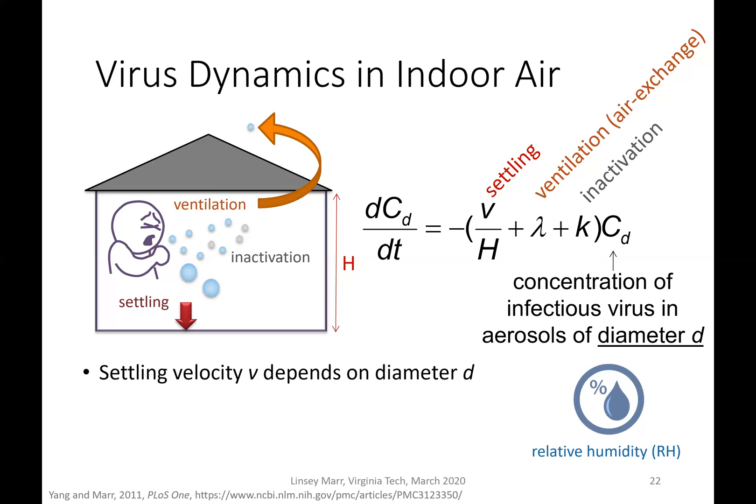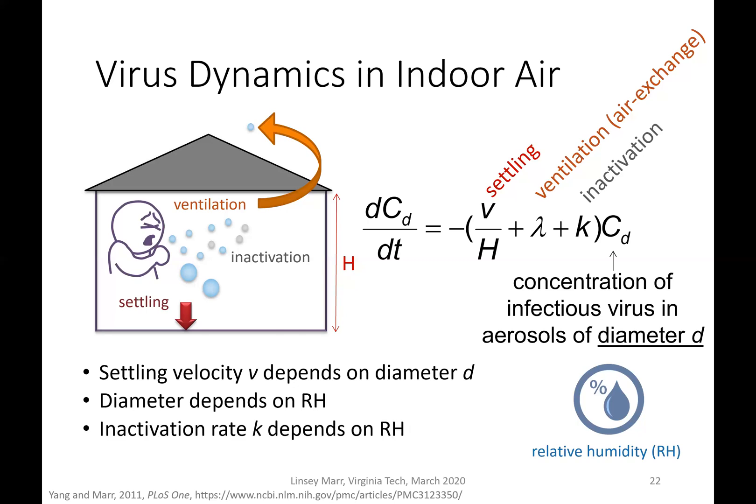So c sub d is calculated as a function of the aerosol or droplet diameter. The settling velocity depends on the diameter, the diameter depends on relative humidity, and it turns out the inactivation rate k also depends on relative humidity.